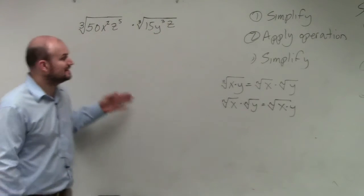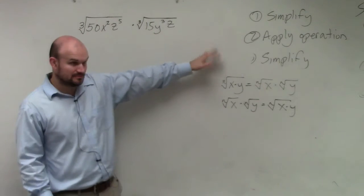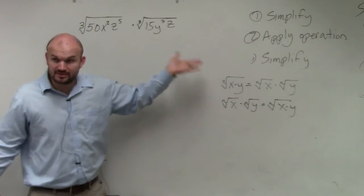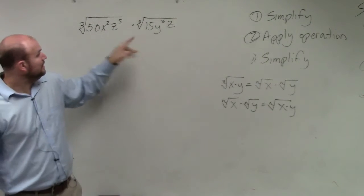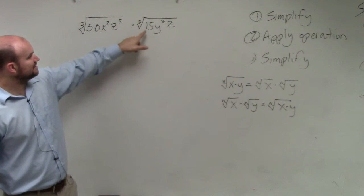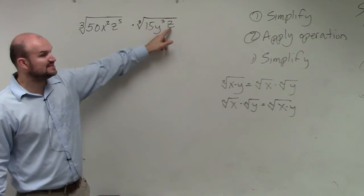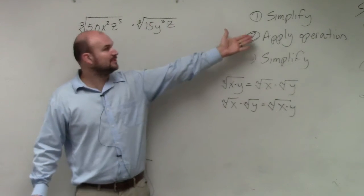So now in this case, guys, we can see that we have the product of two cube roots, because the index is 3, not 2 anymore. We have 50x squared z to the fifth, 15y cubed z. Again, let's follow our operations.